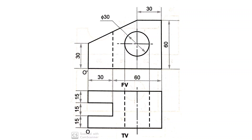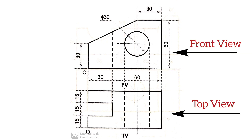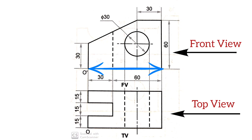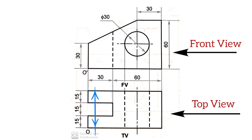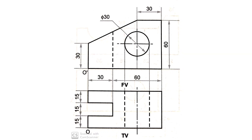Hello friends, welcome to this video series on isometric view. We have two orthographic views — front view and top view — with the origin point given on the left side. The total length of this object is 90 millimeters, the height is 60 millimeters, and the total width is 45 millimeters. From these two orthographic views, we will construct an isometric view.